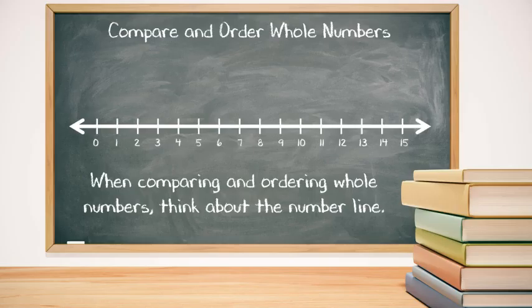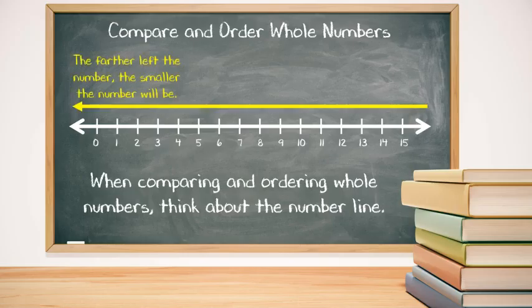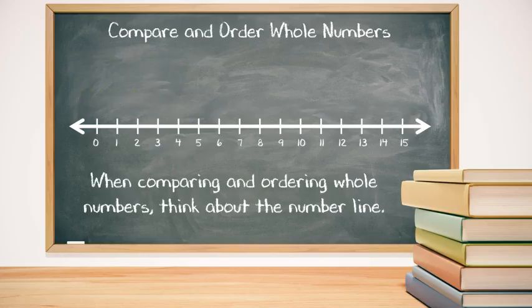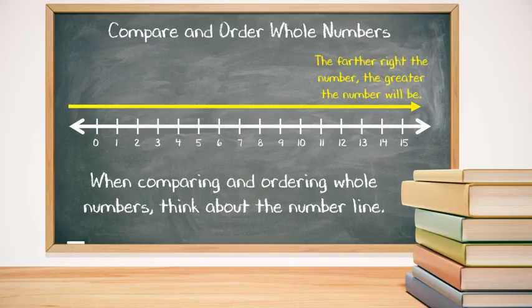Once on the number line, the smallest numbers are on the left. So the farther left the number, the smaller the number will be. The larger numbers are on the right, so the farther right the number, the greater the number will be.